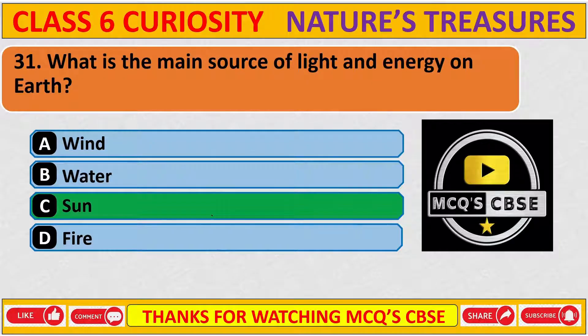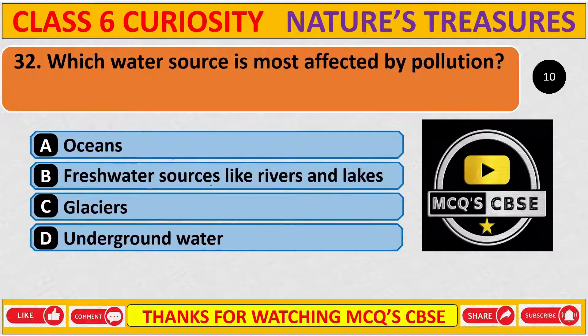What is the main source of light and energy on Earth? The correct answer is C: Sun.